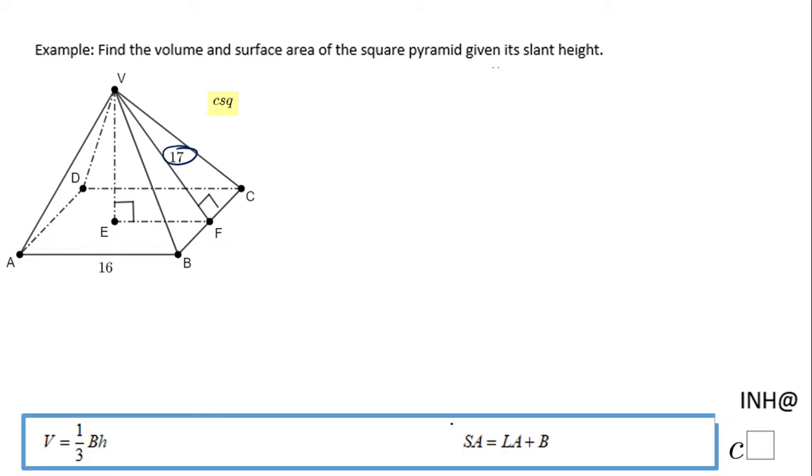We have two formulas here, and I'm going to start with surface area. Surface area is the lateral area plus the base. The base of this square pyramid is a square with side 16. So the area of the base is 16 squared, which equals 256.